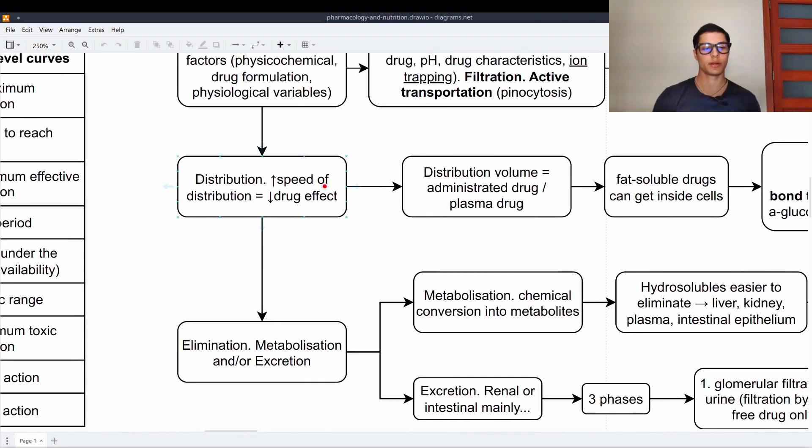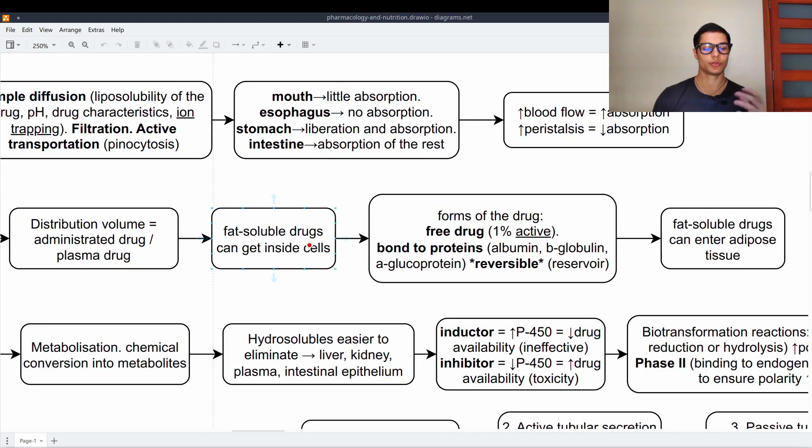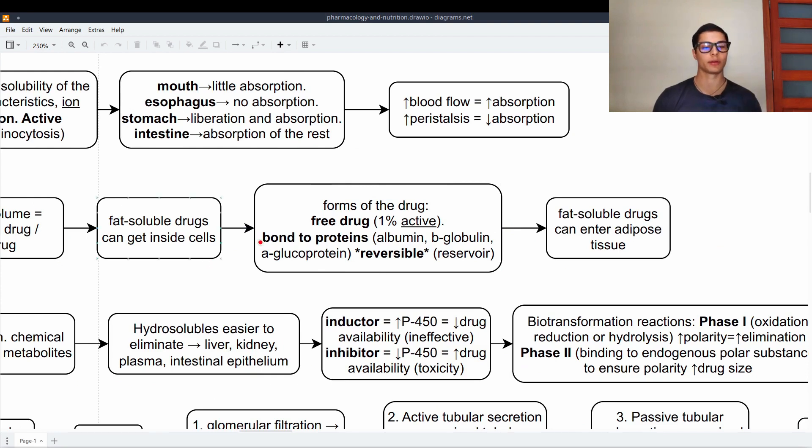Distribution. Higher speed of distribution equals less drug effect. Distribution volume is equal to the administered drug versus the plasma drug. Fat soluble drugs can get inside the cells. And this is because of basic biology.